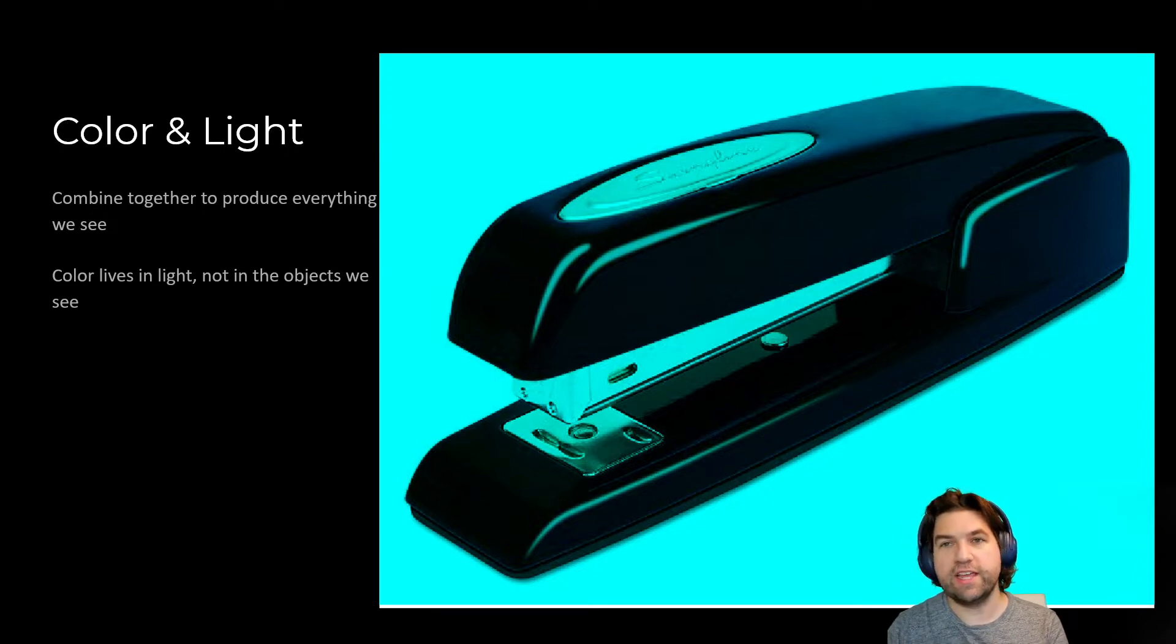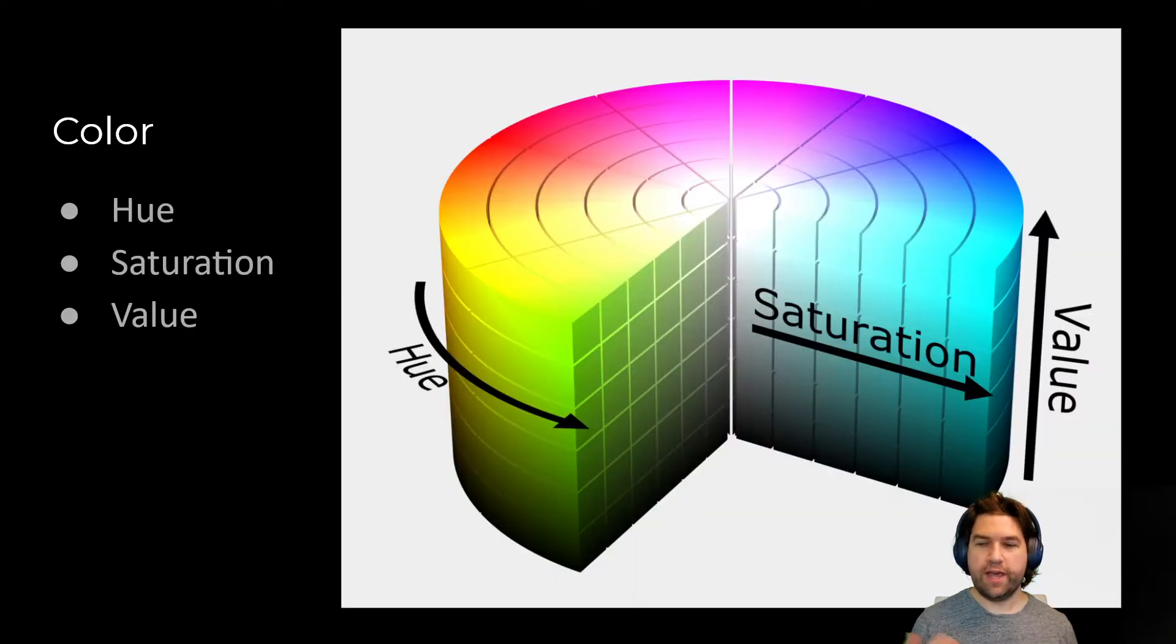This is important for us to think about. Like I talked about the other day, thinking about physically based rendering, light is really important here and understanding where that light comes from is really crucial. And again, a review of our color. Remember, we're thinking about color in terms of hue, saturation, and value.